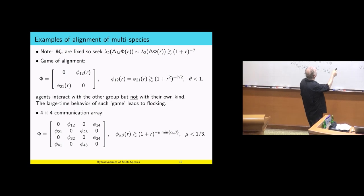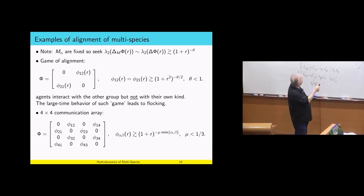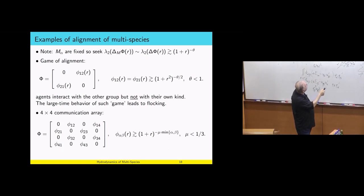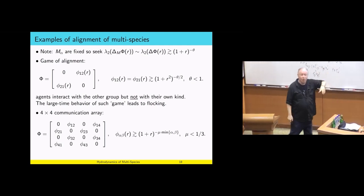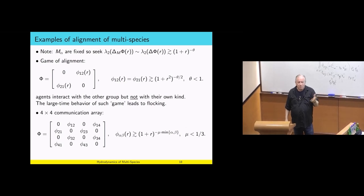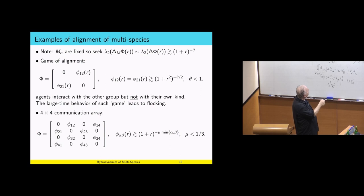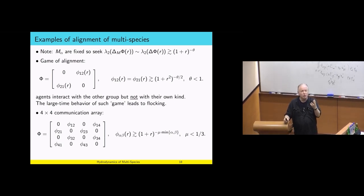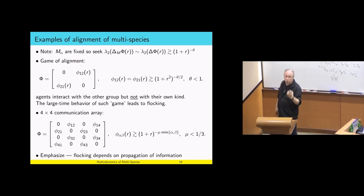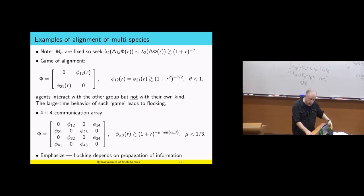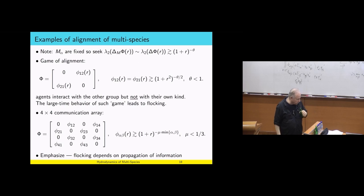Here is an example with four species. There are no self-interactions. Agent four does not interact with agent two, and agent one does not interact with agent three. Still, I claim all of them will get to the same average. Why? Because there is connectivity: agent one talks to two, two talks to one and to three, three talks to two and to four, four talks to one and to three — the cycle is complete. All you need is the geometric notion of connectivity. You don't need everyone to talk to everybody else. What is important is propagation of information, and this has to do with the original weighted Poincaré inequality.